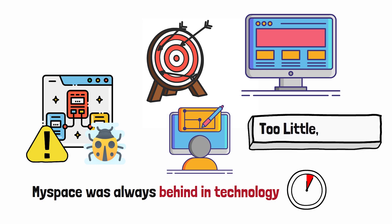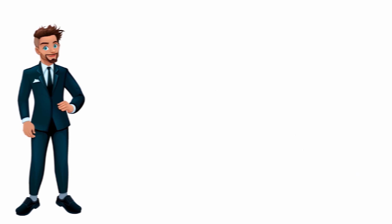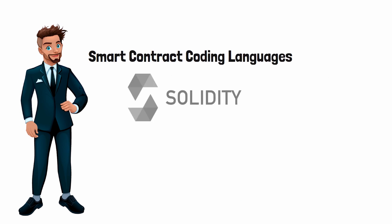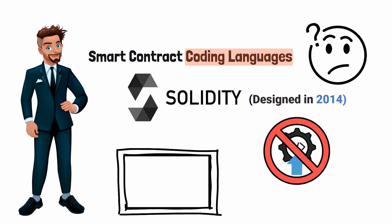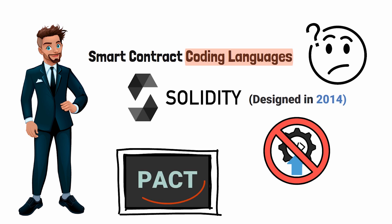Now when we start talking about smart contract coding languages like Solidity, it's hard to imagine that coding languages designed in 2014 and are not upgradable could ever compete with a smart contract coding language like Pact. Unlike Pact smart contracts, Solidity smart contracts cannot be upgraded.